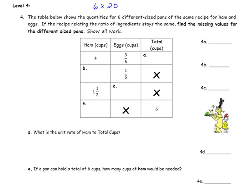For our level 4 question: the table below shows the quantities for 6 different size pans of the same recipe for ham and eggs. If the recipe relating the ratio of ingredients stays the same, find the missing values and show all work. We are making green eggs and ham — the recipe includes ham, eggs, and total number of cups in the pan. To find A, the total cups, add the amount of ham to the amount of eggs: 4 plus 3 fifths equals 4 and 3 fifths.